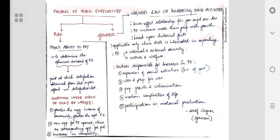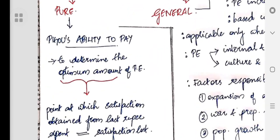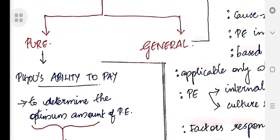Hi friends, today we are going to talk about theories of public expenditure. Theories of public expenditure are generally divided into two: pure theories of public expenditure and general theories of public expenditure.